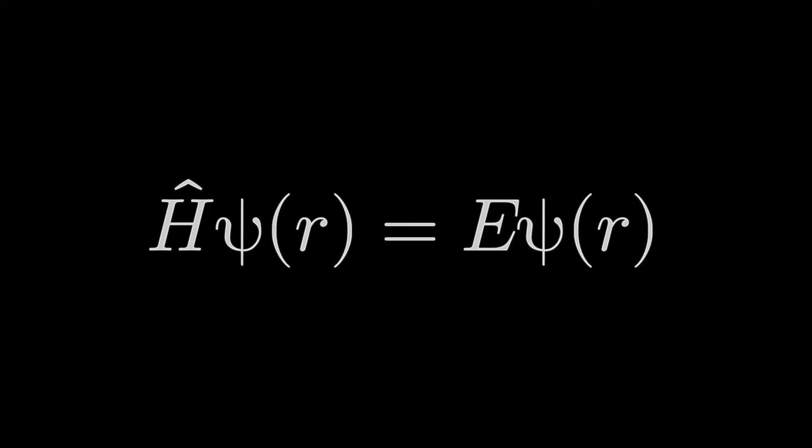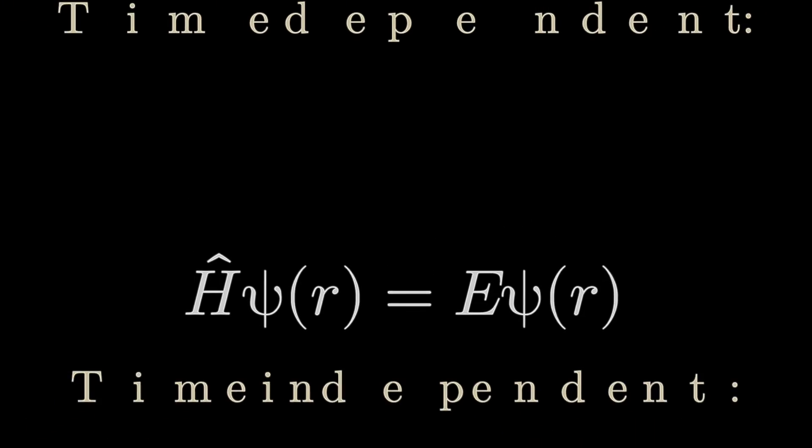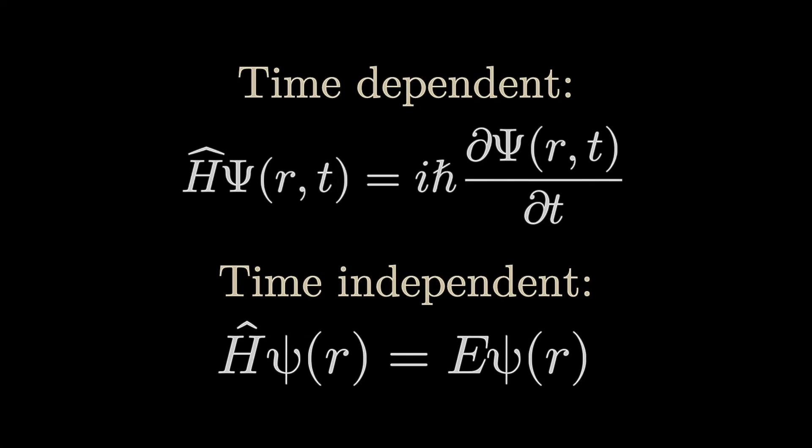This is the time-independent equation, of course. We see no time variance there. For time-dependent equation, we can rewrite as H-hat of capital Ψ(r,t) equals iℏ and the partial derivative, in respect of t, of capital Ψ(r,t).